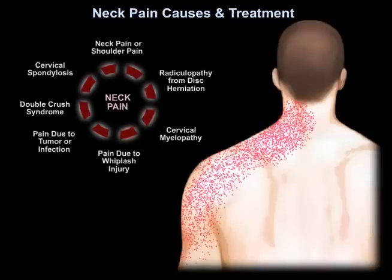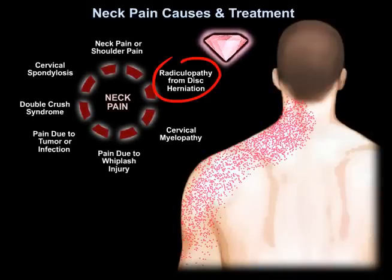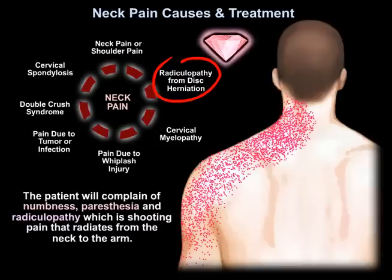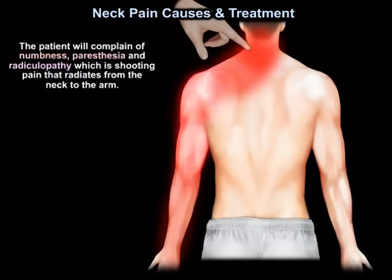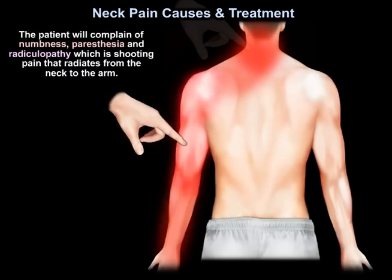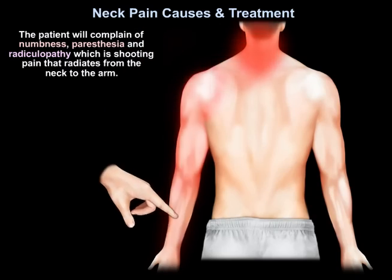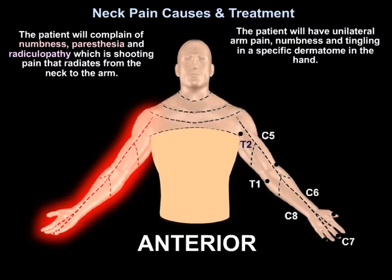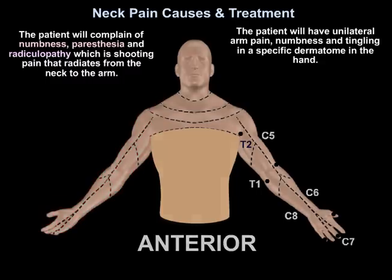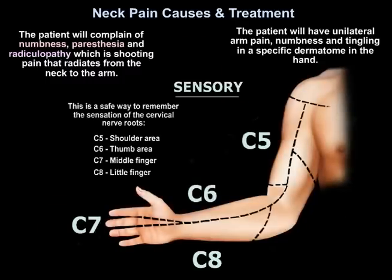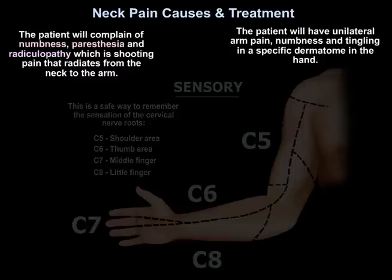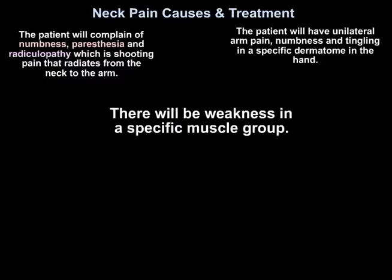An important cause of neck pain is disc herniation. The patient will complain of numbness, paresthesia, and radiculopathy, which is shooting pain that radiates from the neck to the arm. The patient will have unilateral arm pain, numbness, and tingling in a specific dermatome in the hand, as seen in this diagram, and weakness in a specific muscle group.